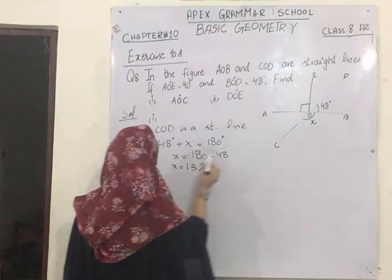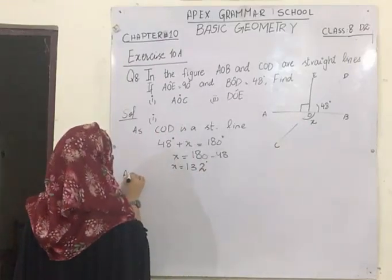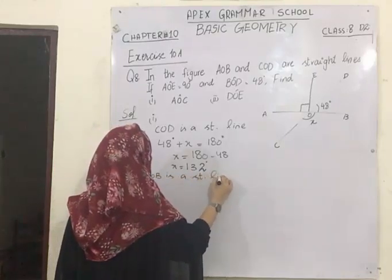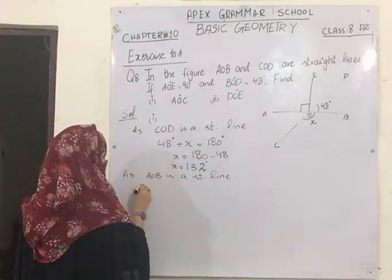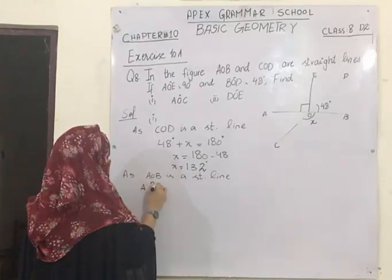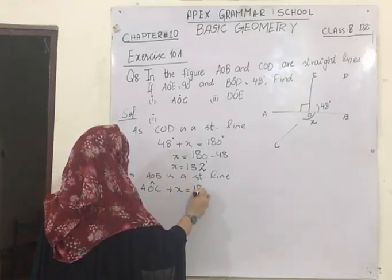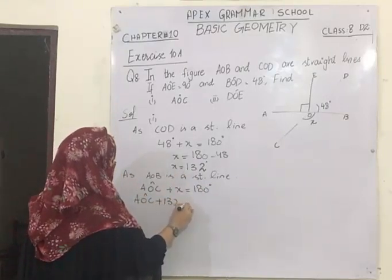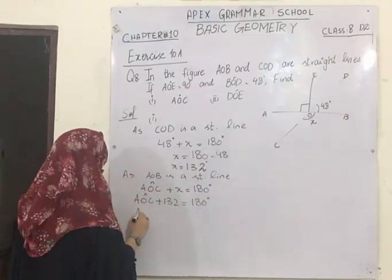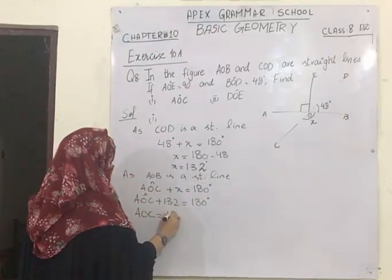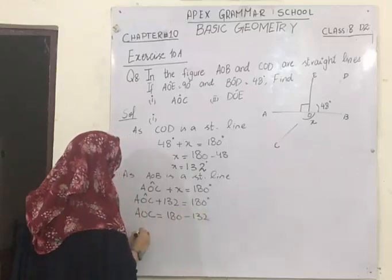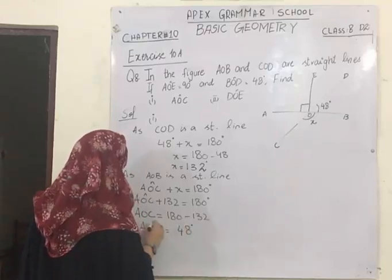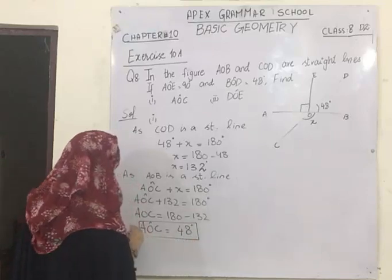Using the value of x, I can find angle AOC. Since AOB is a straight line, angle AOC plus x equals 180 degrees. The value of x is 132, so angle AOC plus 132 equals 180. Since 132 is being added on one side, it will be subtracted on the other side, giving the value of angle AOC as 48 degrees.